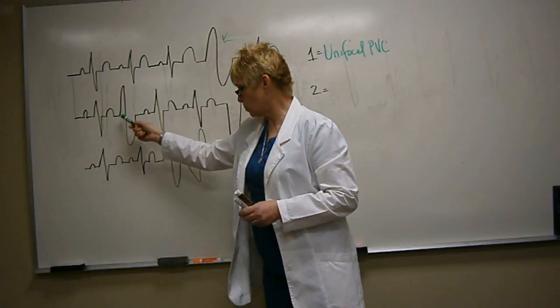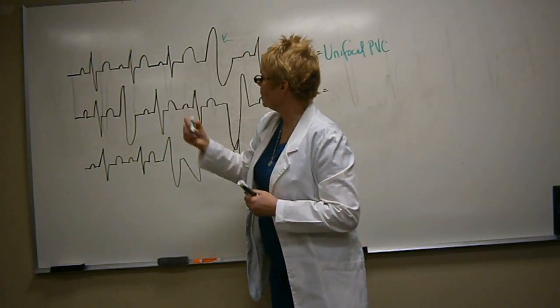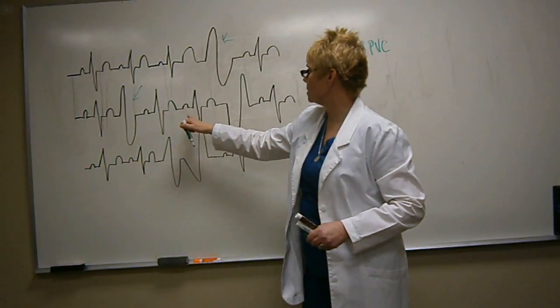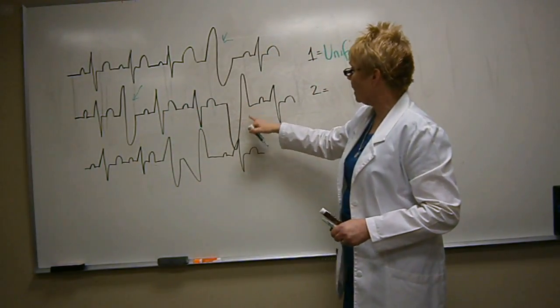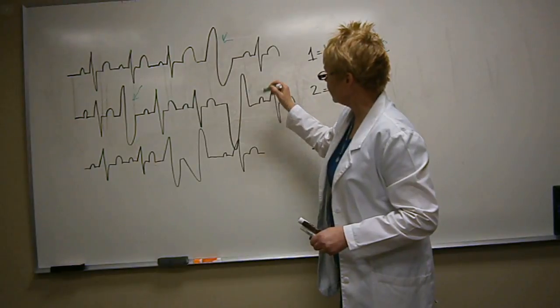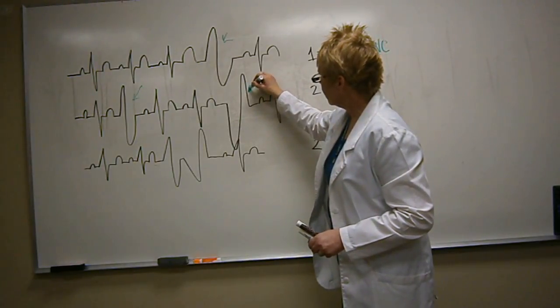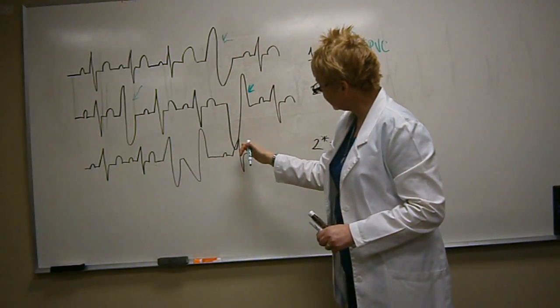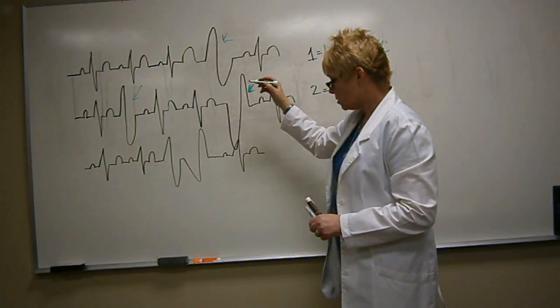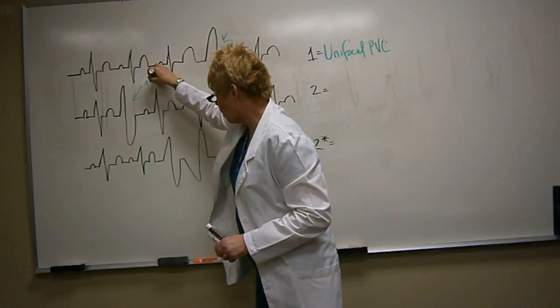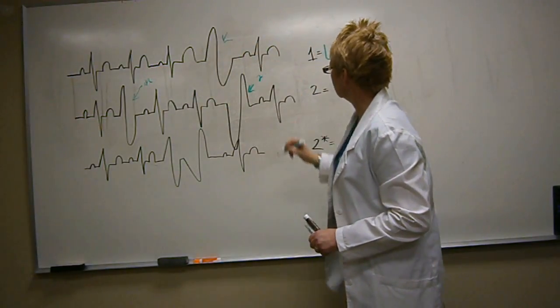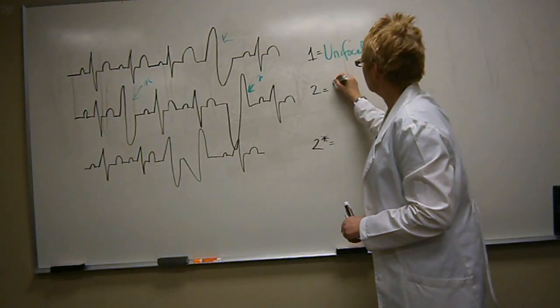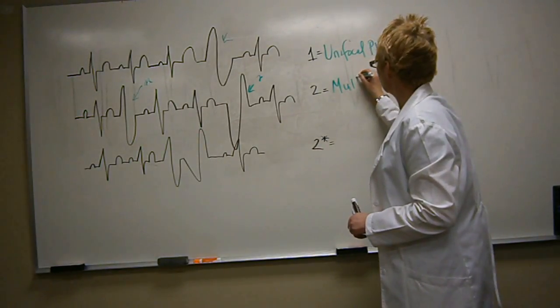On this, I have a sinus beat, then I have another PVC that looks like this one, sinus beat, sinus beat, sinus beat, and then I have another PVC here. How this one went, had an upward deflection first, then a downward. This one has a downward deflection, then an up. So this is PVC number one, this is PVC number two. When you have two PVCs, it is called multifocal.